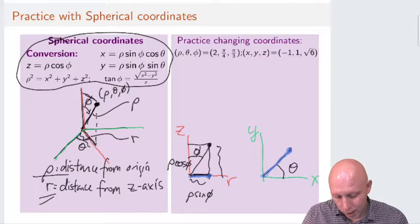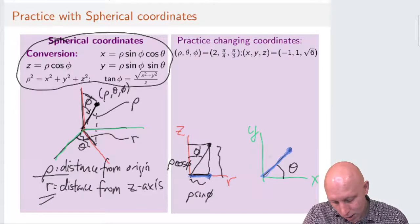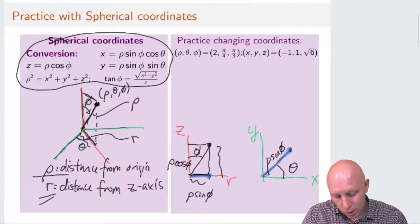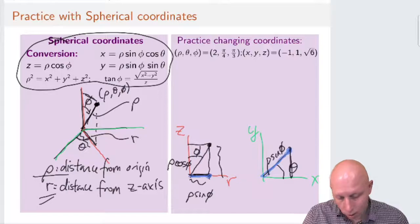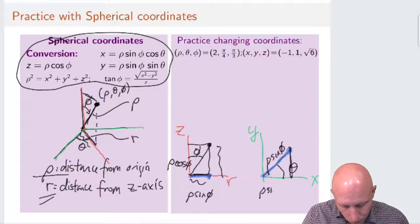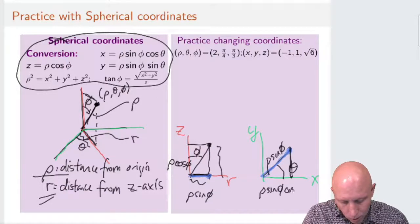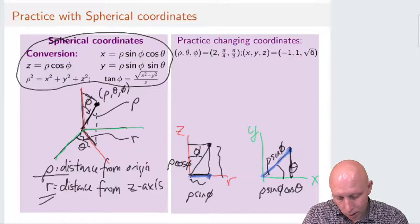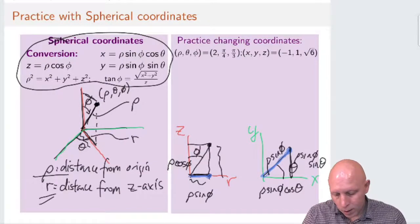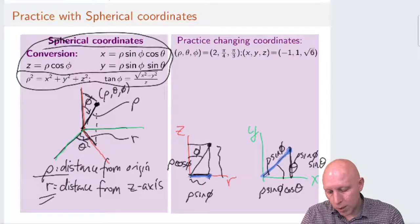And so that's telling us we know that the distance of this segment is rho sine of phi. And so then we can figure out what x is and y is by doing rho sine of phi cosine of theta and rho sine of phi sine of theta. So that's where these equations come from.